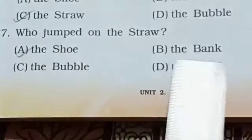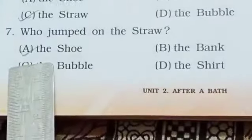7. Who jumped on the straw? A. The shoe, B. The bank, C. The bubble, D. The shirt. Correct answer, A, the shoe.